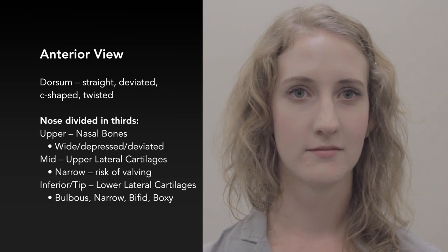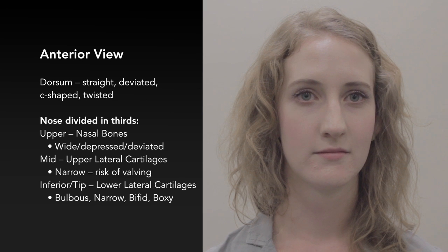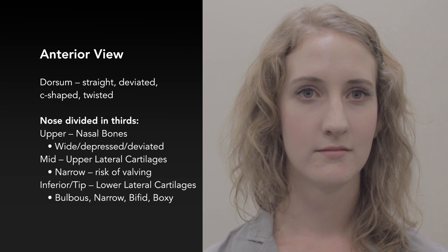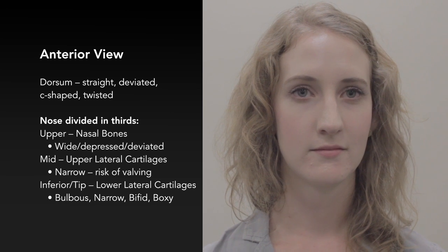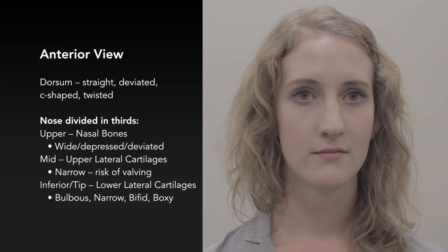Begin with general statements about the patient's height, sex, ethnicity and skin features. If there is an obvious feature, comment on this first before progressing in an ordered manner — for example, 'the most striking feature is a large dorsal hump.' Looking at the nose, the dorsum is straight with appropriate brow-tip lines. The superior, middle and lower thirds are normal in width and alignment. The tip is appropriate for the patient.